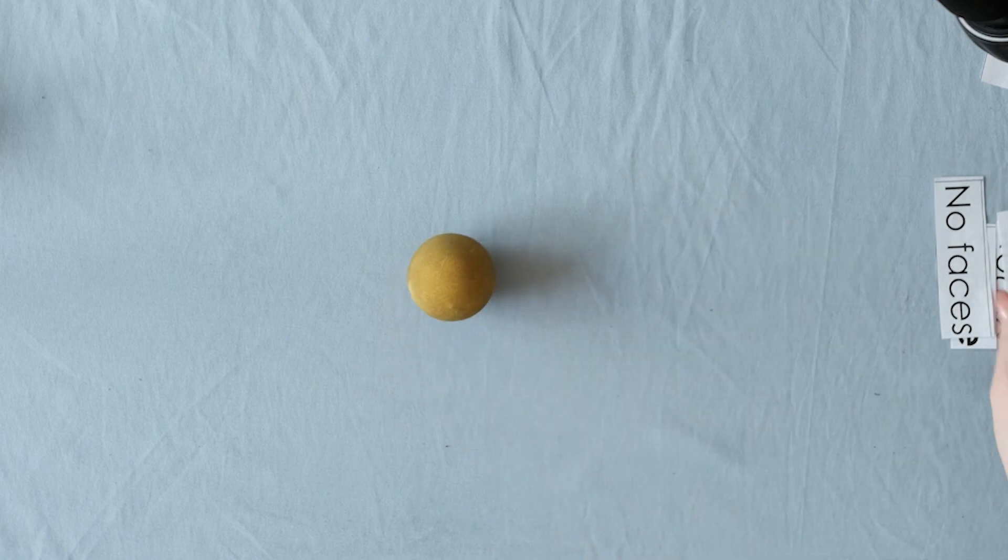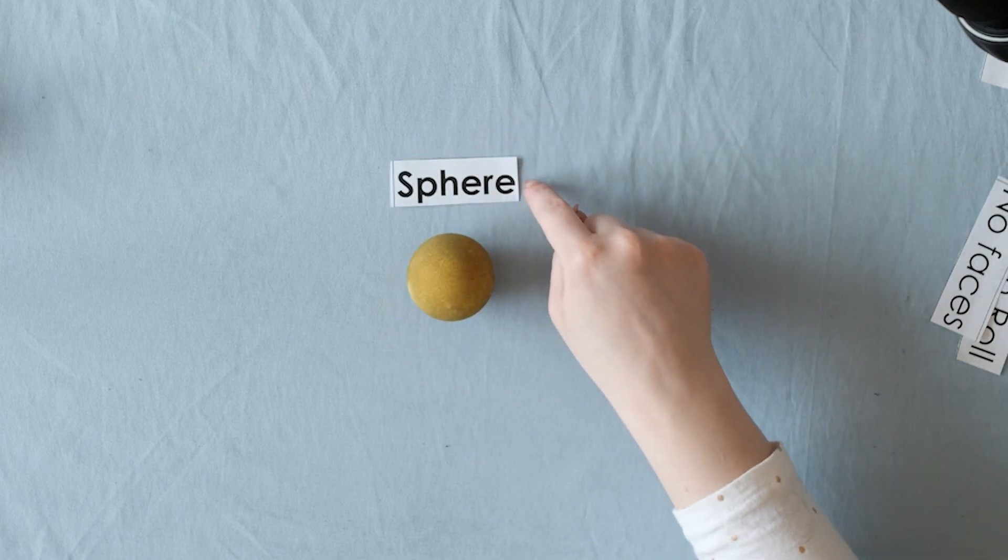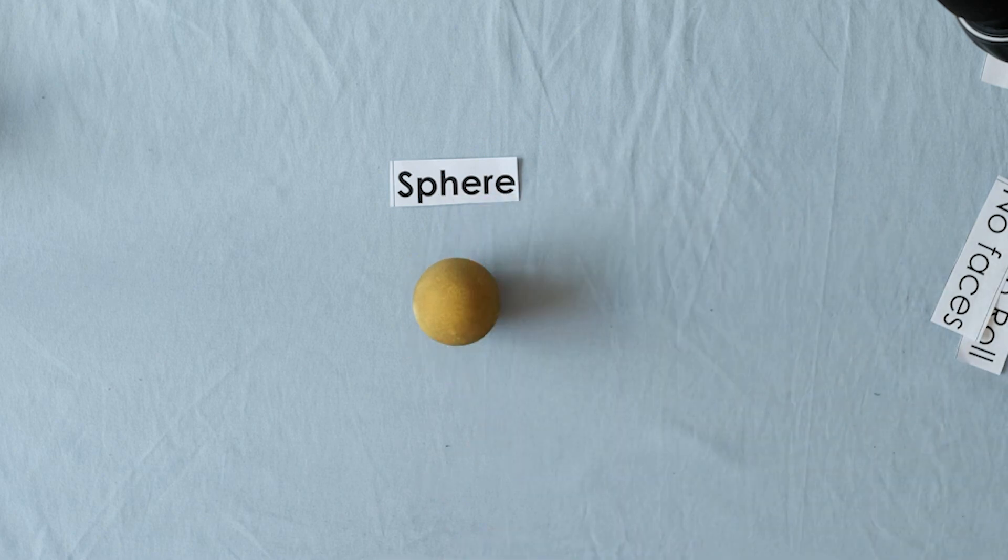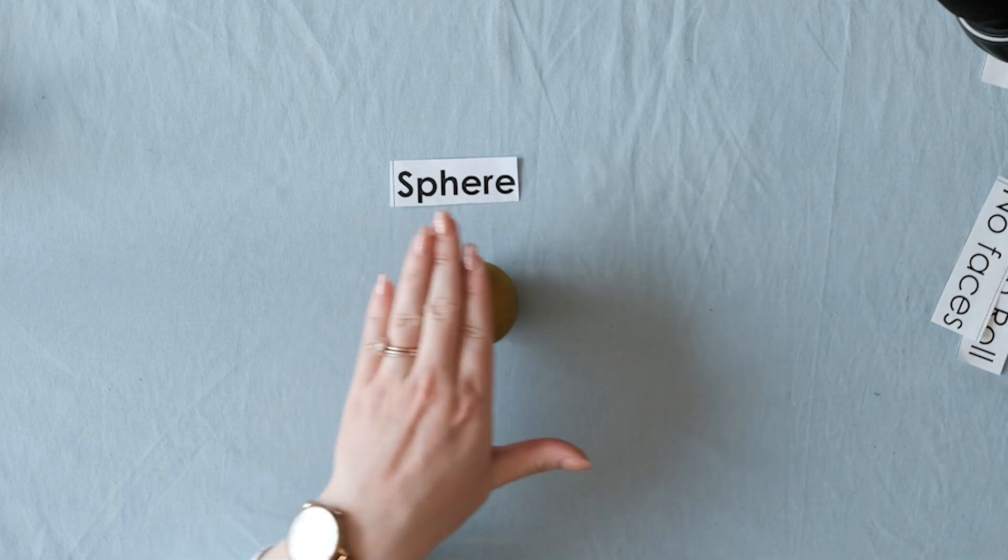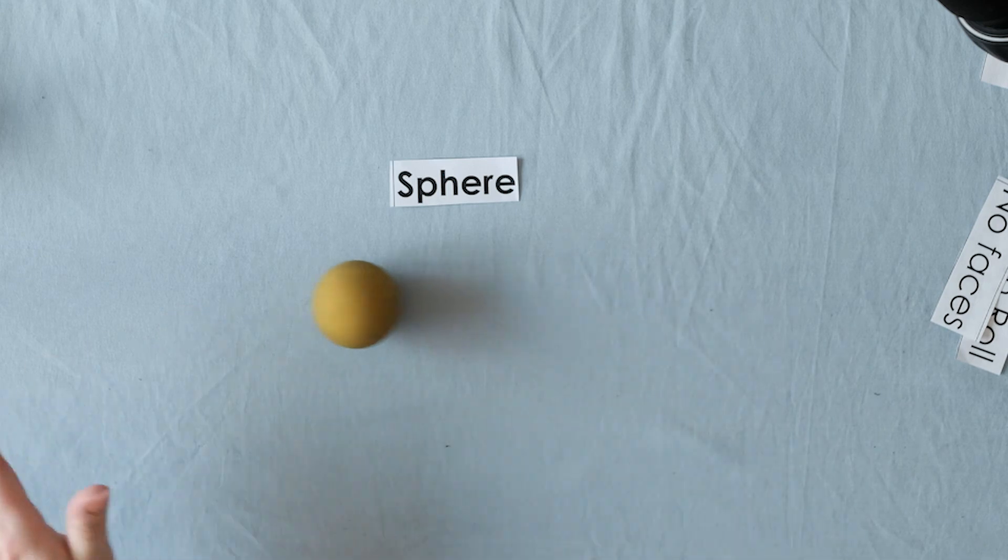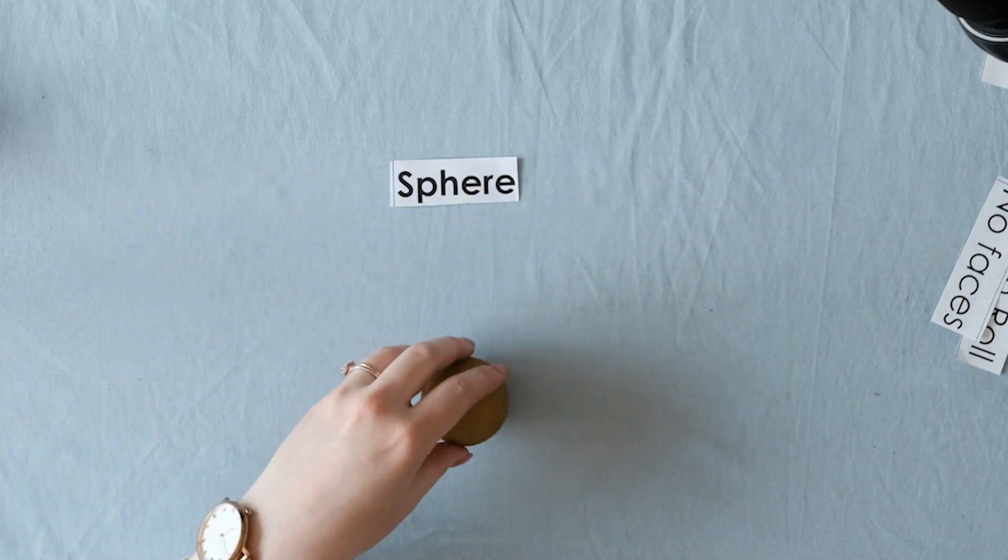Moving on to the next one. This kind of looks like a ball, but the word we use in math is called a sphere. It is round, just like a ball. Let's see what makes it special.